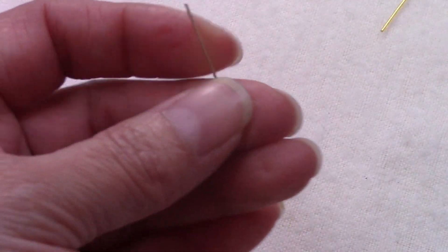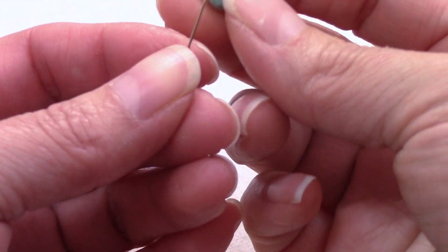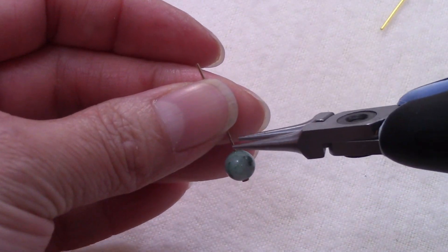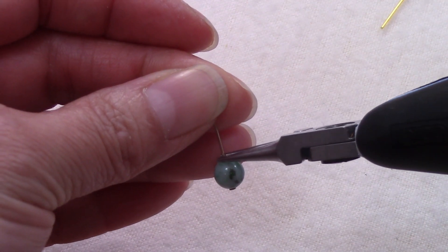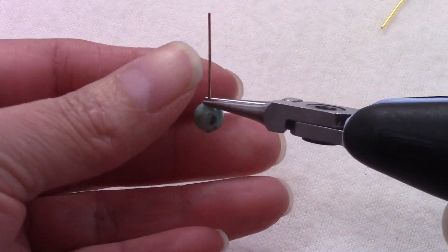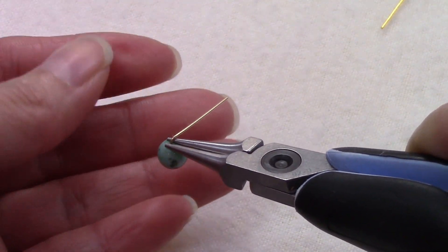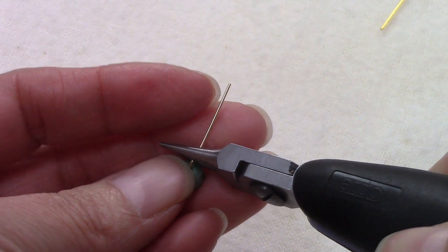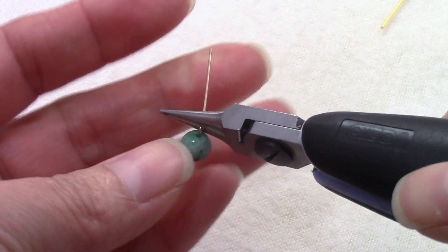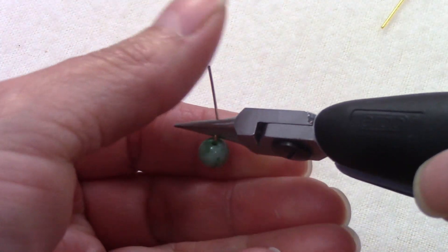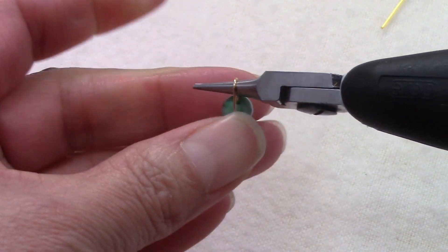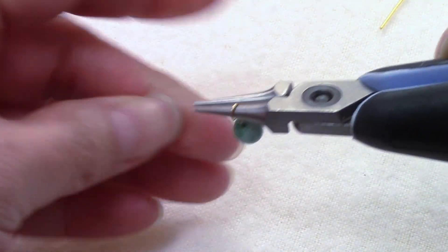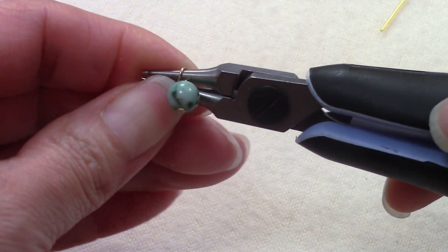To start we are going to grab one of our head pins and one of our beads. We are going to set our pliers right at the edge, we are going to bend our head pin. We are going to set the pliers on top, bring the wire towards you, rotate your pliers and continue all the way until you touch your pliers.